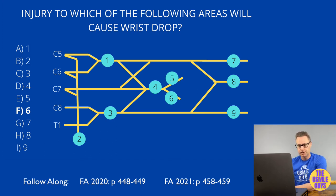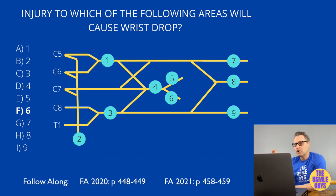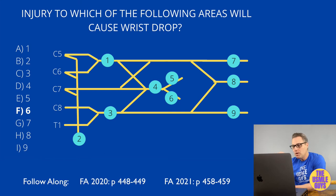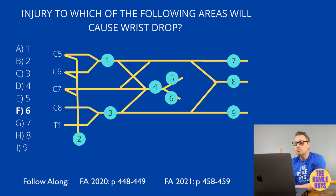Wrist drop is caused by injury to the radial nerve, which can be precipitated by a mid-shaft fracture of the humerus or compression of the axillary region. If the injury occurs above the elbow, we see loss of sensation over the posterior arm, forearm, and dorsum of the hand in addition to wrist drop. If the injury is below the elbow, this causes distal paresthesias without wrist drop — an important distinction.